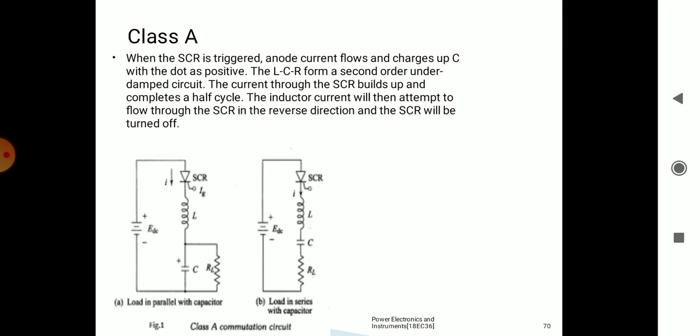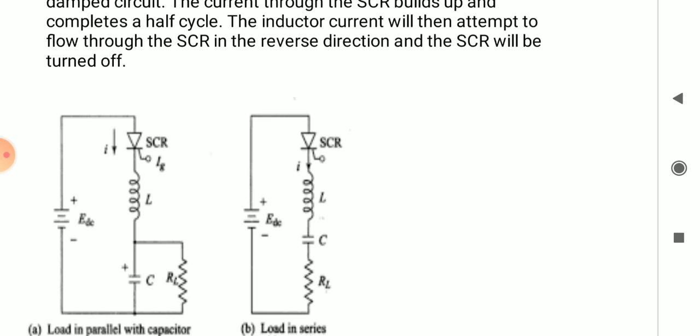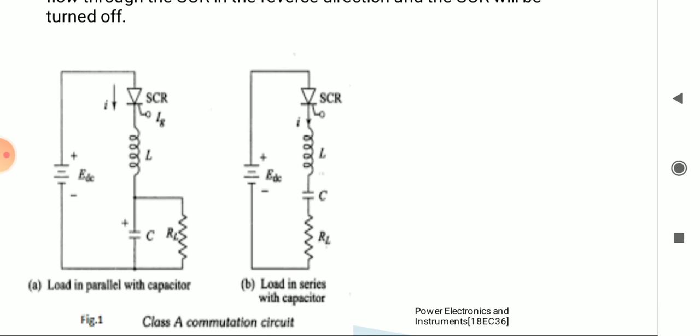The first one is Class A. When an SCR is triggered, this circuit uses LCR — we can call it resonating commutation. We are using commutating components: inductor, capacitor, as well as a resistor. In this circuit, the resistor is connected in parallel with the commutating component, that is the capacitor. The load is in parallel with the capacitor, and the commutating components are inductor and capacitor. Since all three — R, L, C — are present, we call it resonating commutation, or self-commutation by resonating the load.